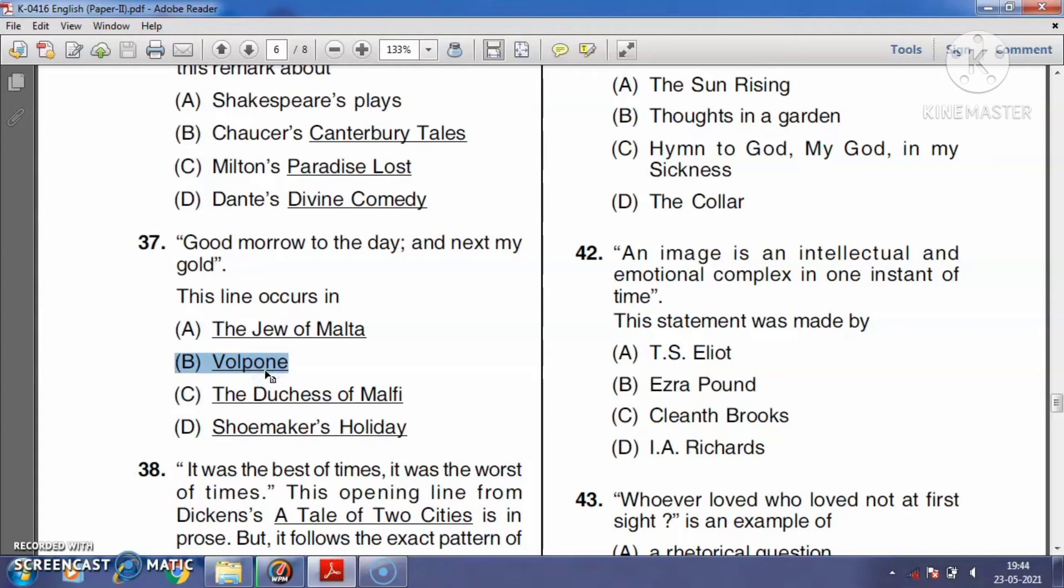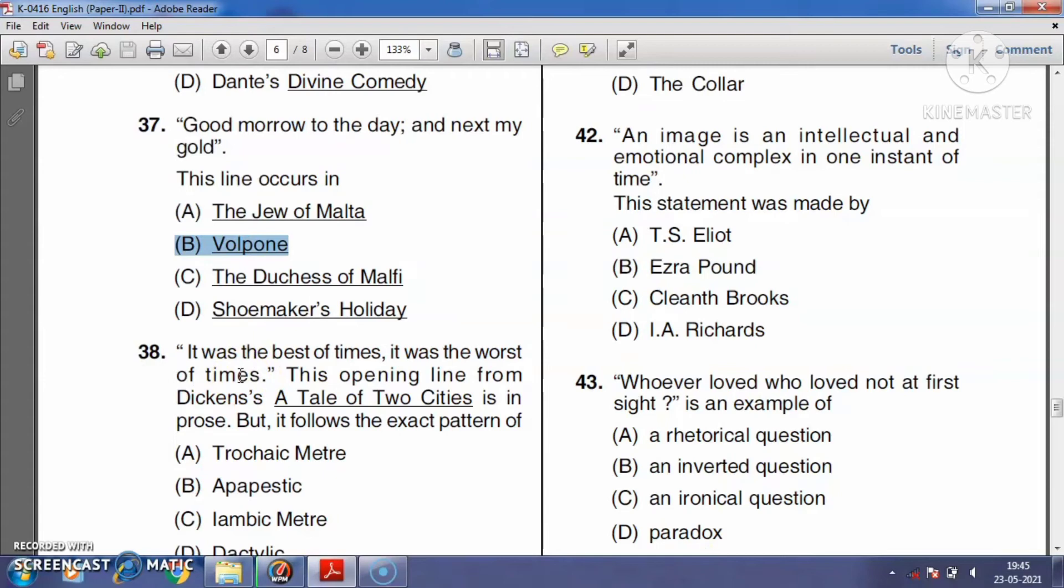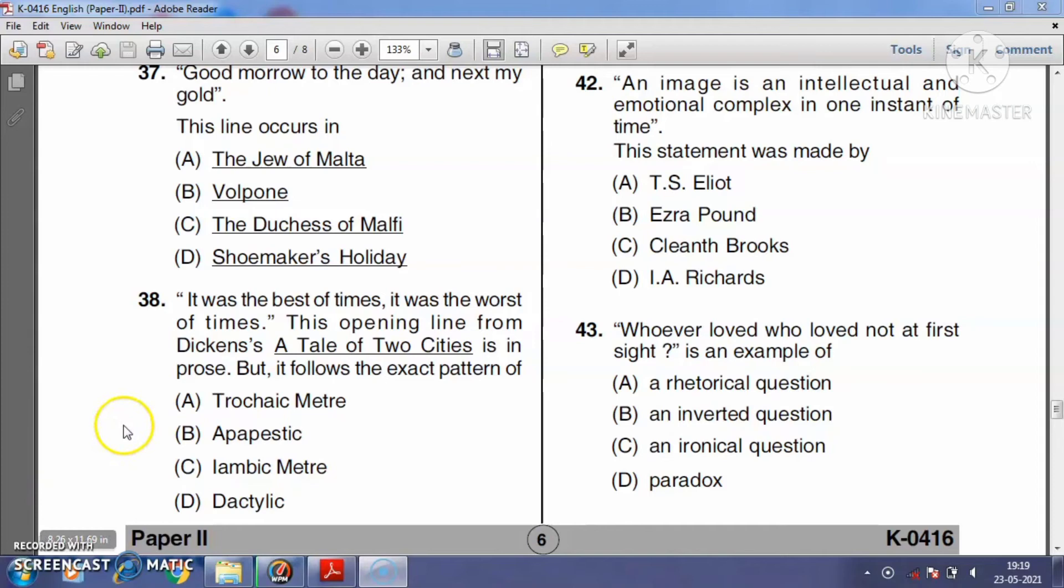Question number thirty-eight: 'It was the best of times, it was the worst of times.' This opening line from Dickens's A Tale of Two Cities is in prose, but it falls into the exact pattern of pyrrhic meter, anapestic meter, iambic meter, or dactylic meter? The right answer is option C, iambic meter.